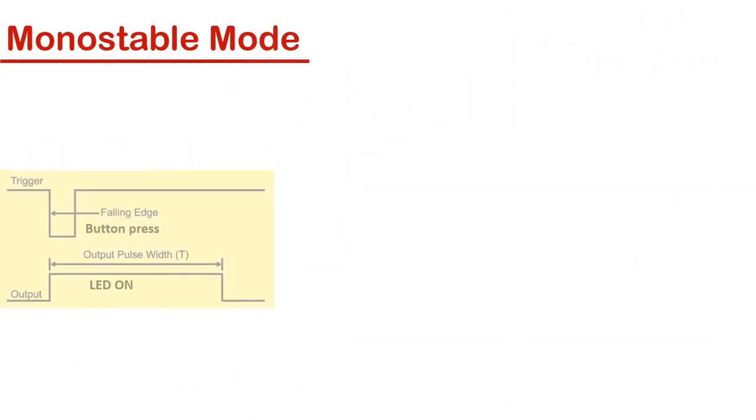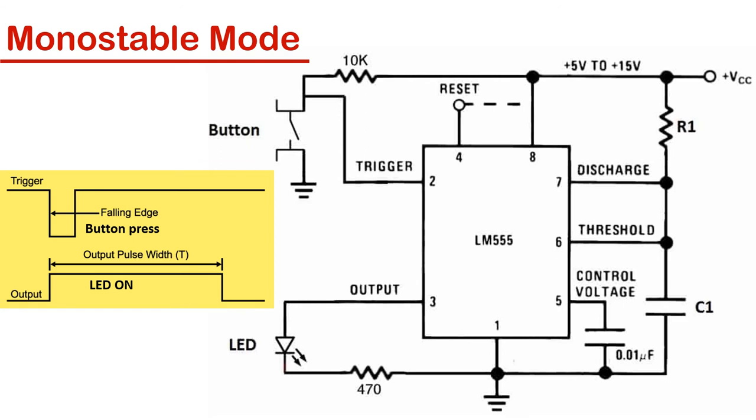In monostable mode, the 555 timer outputs a single pulse of current for a certain length of time. An example of this can be seen with an LED and a push button. When we press the button, the LED will light up, then turn off automatically after a predetermined length of time.